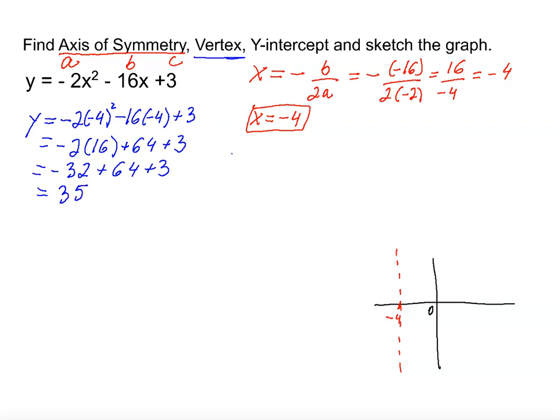So the vertex, in this case, is going to be negative 4 and 35. So if I take this number line a little higher, then positive 35, let's say that's somewhere here, so the vertex, the dot, is going to be over here. So that's the vertex.